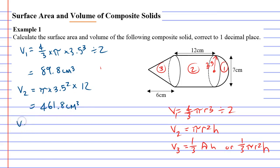Now we'll do the cone, which is one-third times pi times r squared, 3.5 squared, times height, which for the cone is 6. Let's work that one out: one-third times pi times 3.5 squared times 6, and that comes out to 77.0 when we round it to one decimal place.